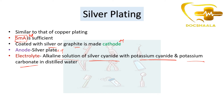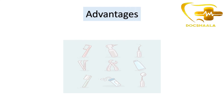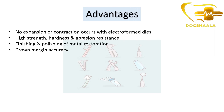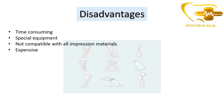The advantages of electroform dies are: no expansion or contraction occurs, there is high strength, hardness, and abrasion resistance, finishing and polishing of metal restorations can be done, and crown margin accuracy can be obtained. The disadvantages are that the process is time consuming, requires special equipment, is not compatible with all impression materials, and is expensive.